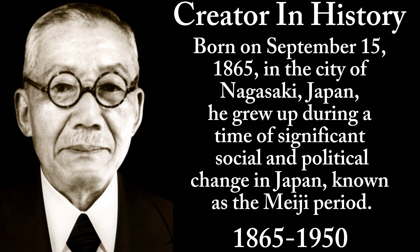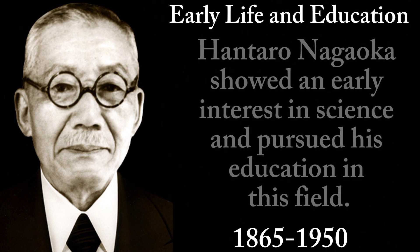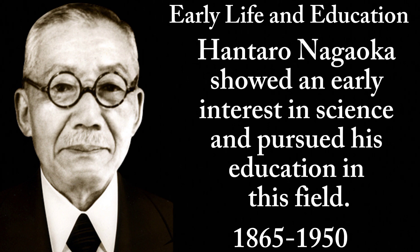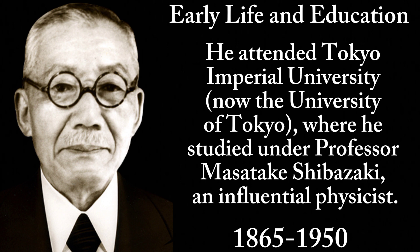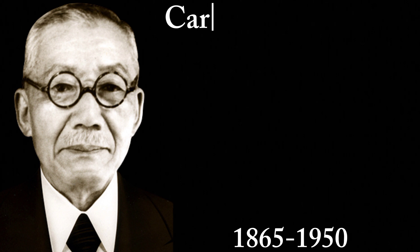Nagaoka grew up during a time of significant social and political change in Japan known as the Meiji period. He showed an early interest in science and pursued his education in this field. He attended Tokyo Imperial University, now the University of Tokyo, where he studied under Professor Masatake Shibasaki, an influential physicist. Nagaoka graduated in 1887 with a degree in physics.